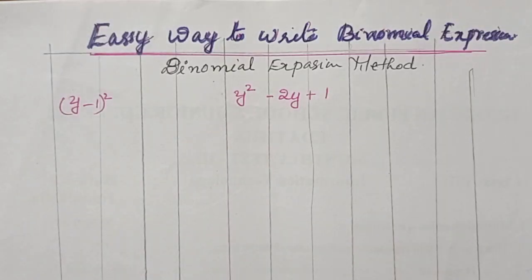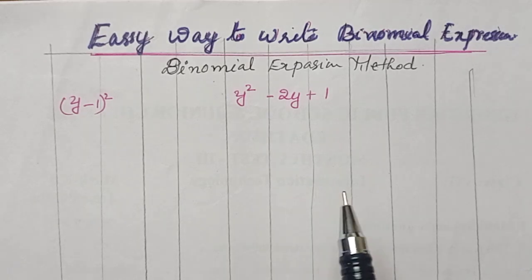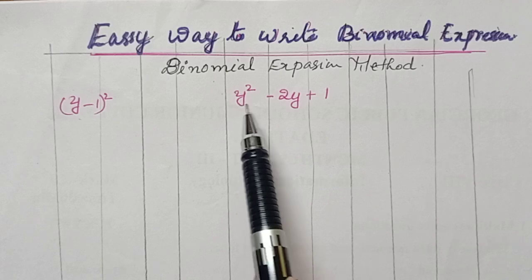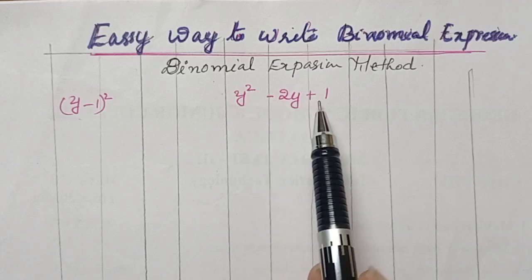y minus 1 the whole square, we all know the formula a minus b the whole square. Therefore, y minus 1 the whole square is y squared minus 2y plus 1.